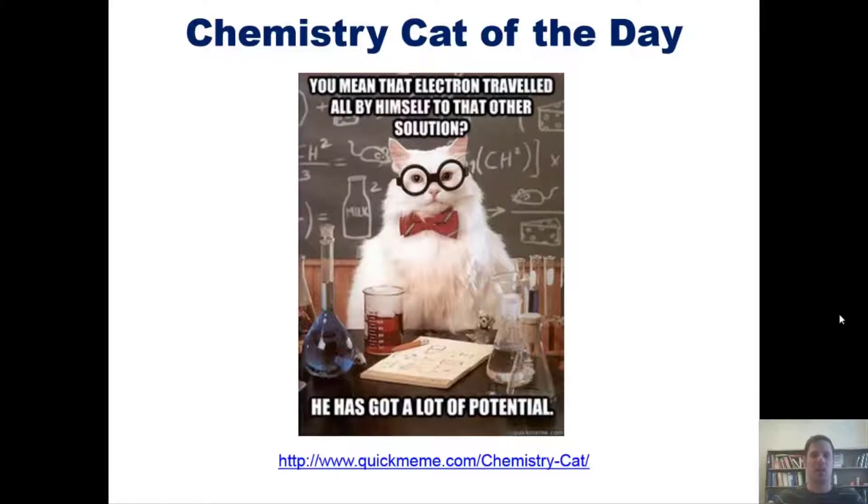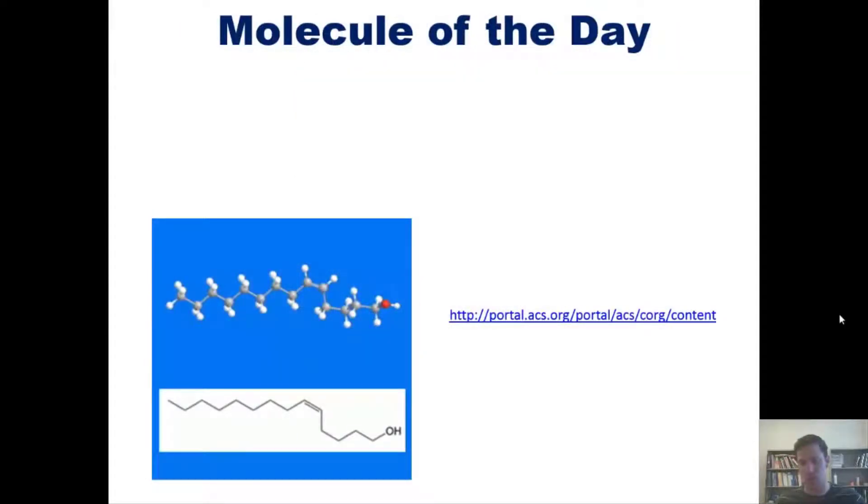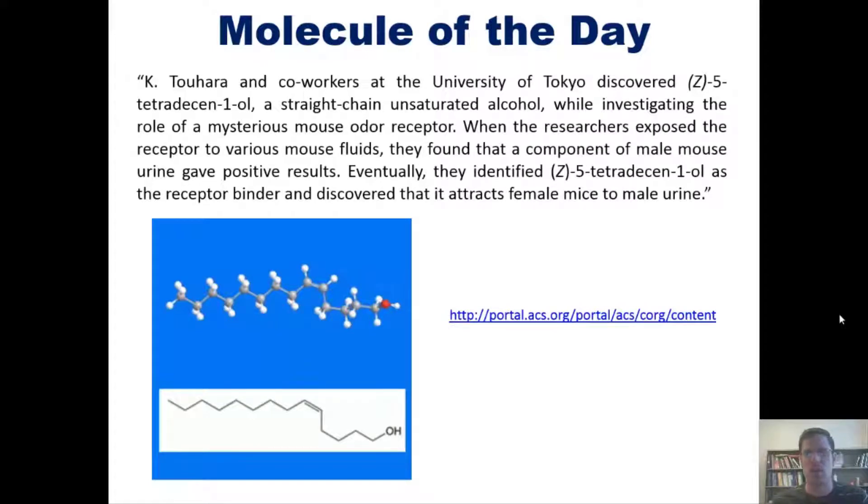I'd also like to share a molecule of the day from the American Chemical Society information portal. K. Touhara and co-workers at the University of Tokyo discovered Z5-tetradecene 1-ol, a straight chain unsaturated alcohol whose structure is shown here, while investigating the role of a mysterious mouse odor receptor. They found that a component of male mouse urine gave positive results. Eventually, they identified Z5-tetradecene 1-ol as a receptor binder that attracts female mice to male urine.